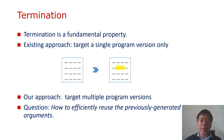The key question we want to answer in this paper is: if we are given the termination arguments for the previous program version, can we reuse it, and how should we reuse it in the termination analysis of the current program version?